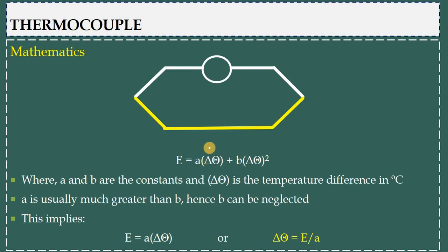Let's say this is M1 and this is M2. This forms junction 1 and this forms junction 2. Here this is temperature T1 and here this is temperature T2. If there is a temperature difference, that means T1 is not equal to T2.